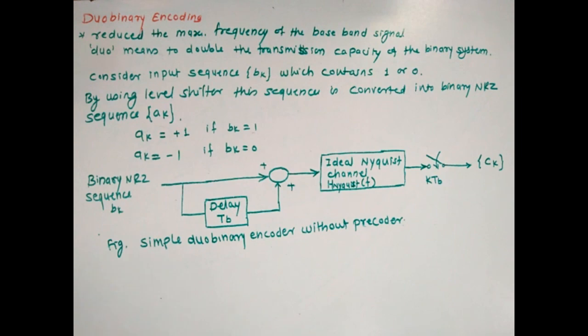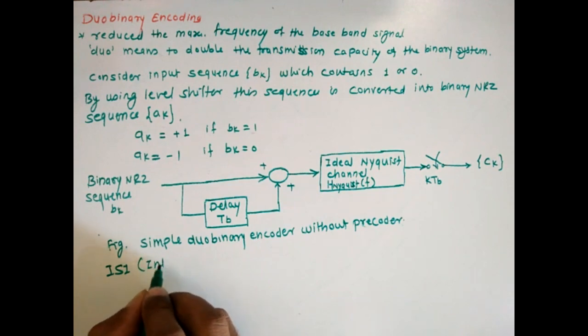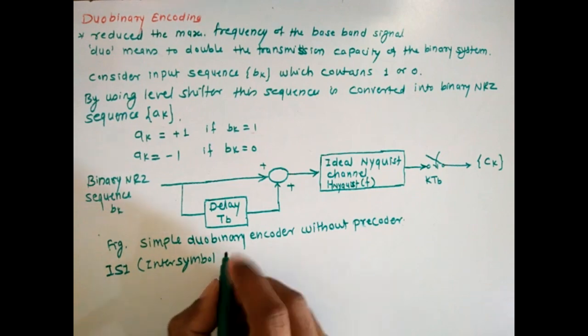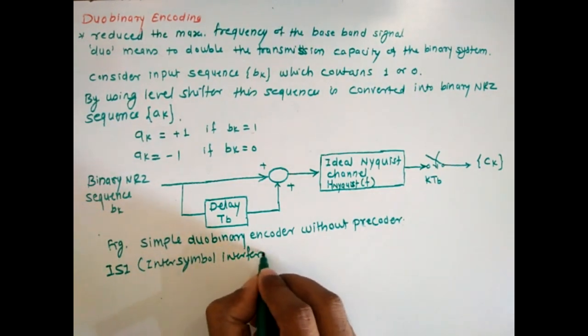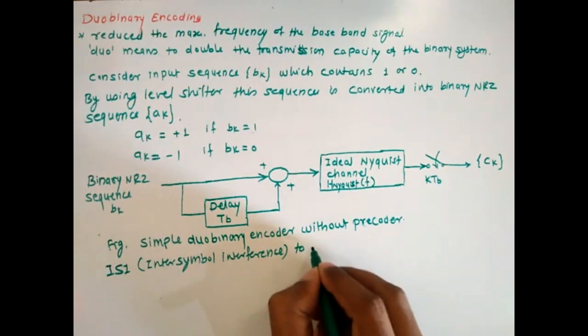Because of this type of encoder, the uncorrelated sequence ak of two-level pulses is converted into a correlated sequence of three-level pulses. This introduces inter-symbol interference (ISI) in the signal in an artificial manner to reduce bandwidth.